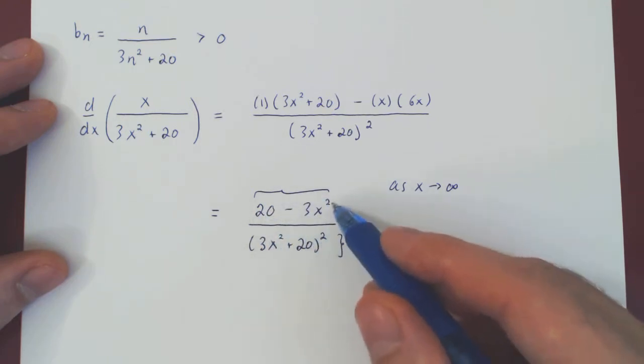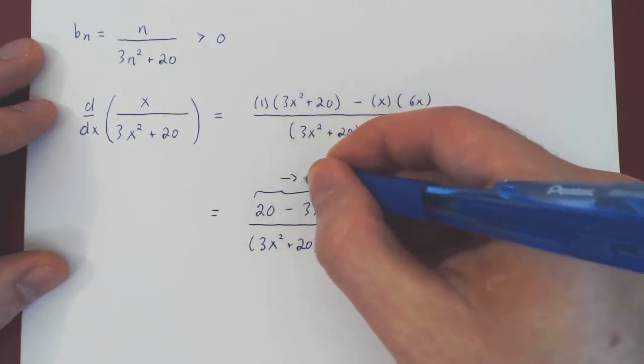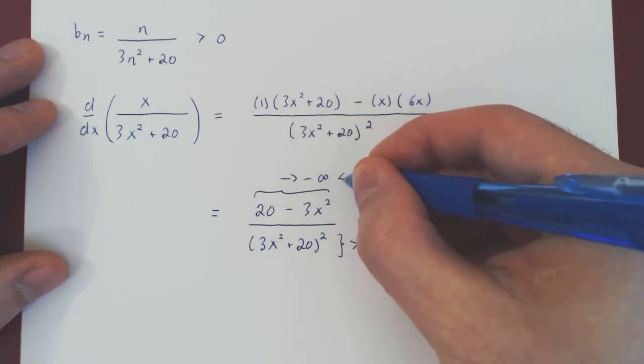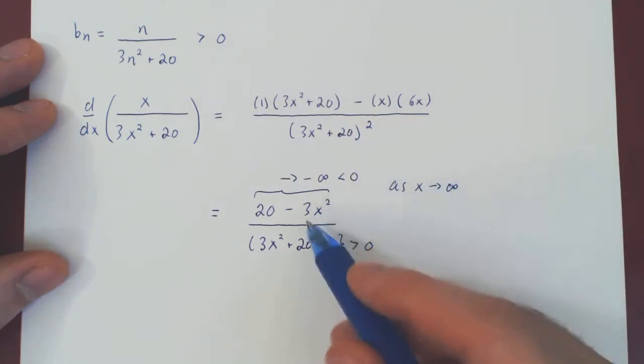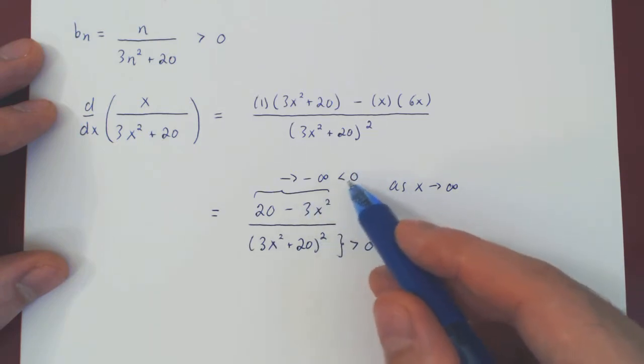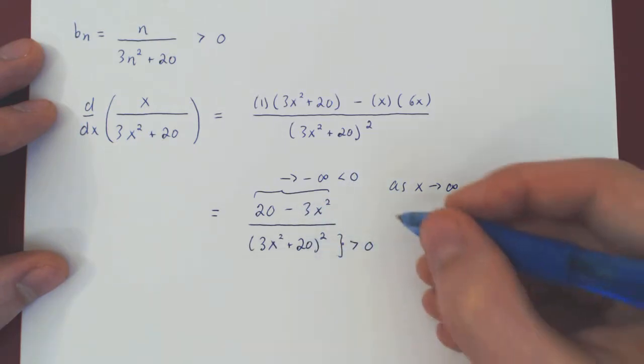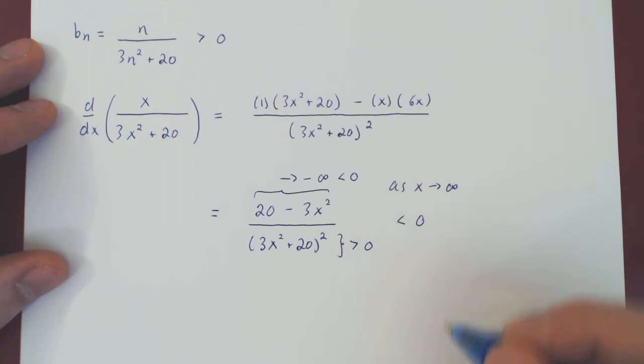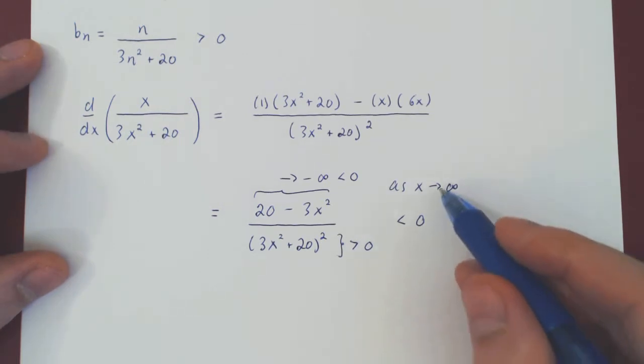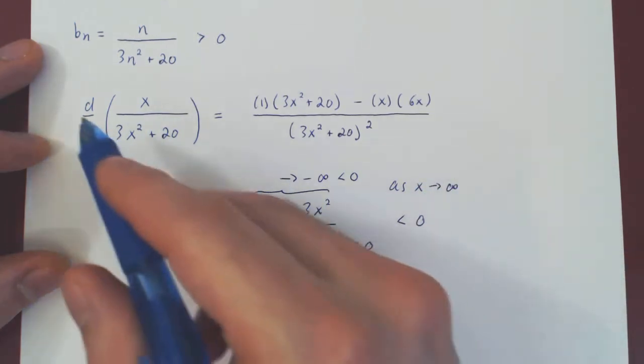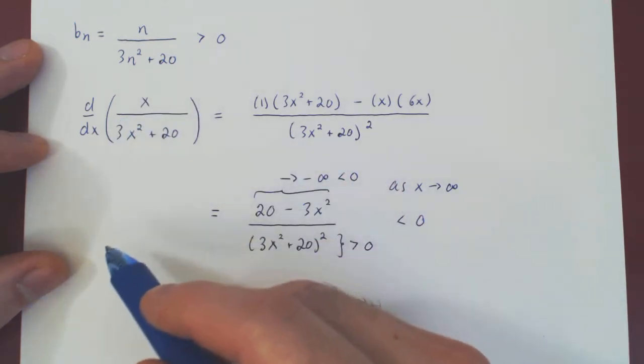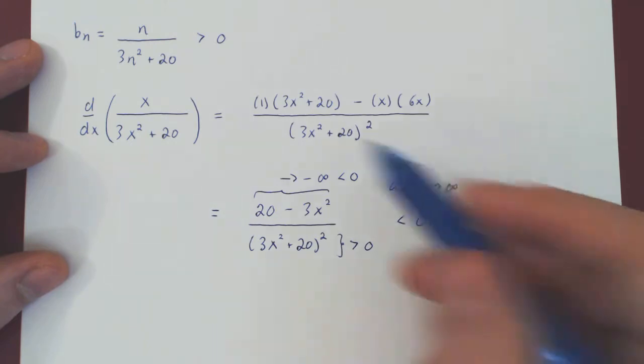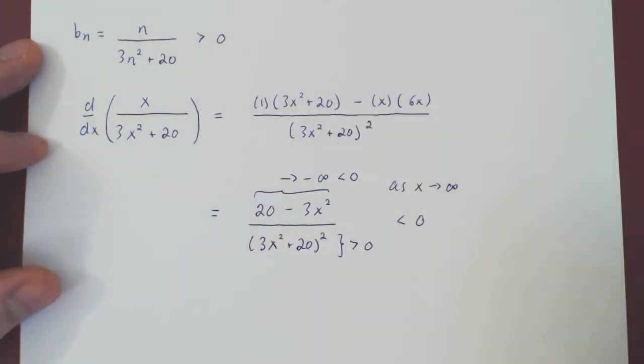And so when x is big enough, the fraction will consist of a negative number over a positive number, therefore it's clearly negative. So when x is big enough, the derivative of our function is negative, therefore the function is decreasing when x is large enough, therefore bn is eventually decreasing.